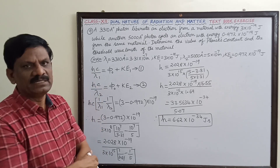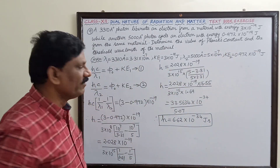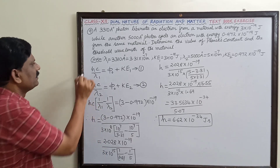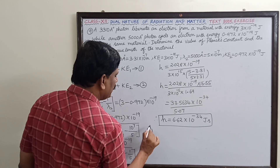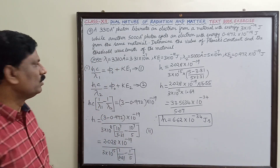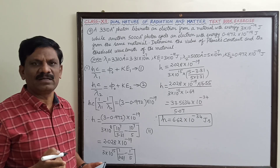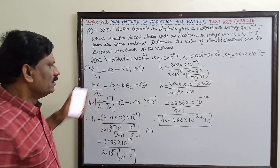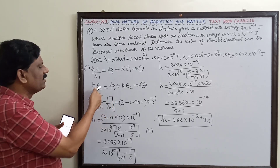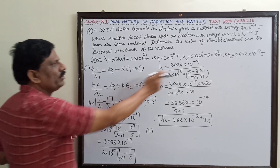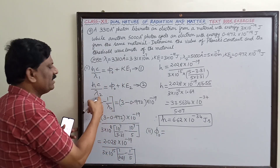That is only the first subdivision — we have determined Planck's constant. Now we need to find the threshold wavelength. To find threshold wavelength, we first need the work function, because φ₀ = hν₀ = hc/λ₀. From equation 2, φ₀ = hc/λ₂ − KE₂.